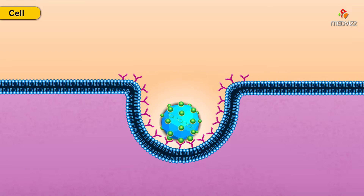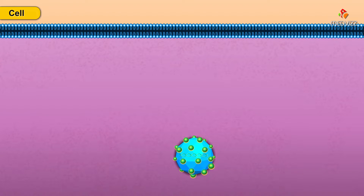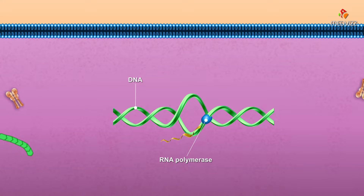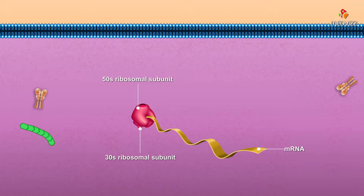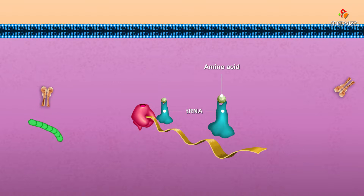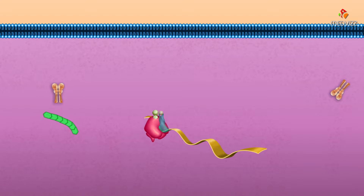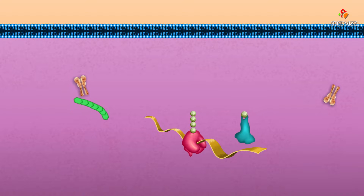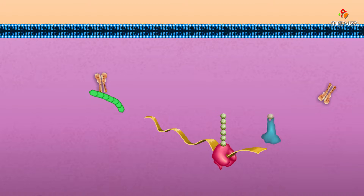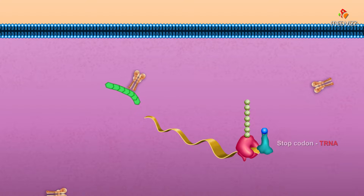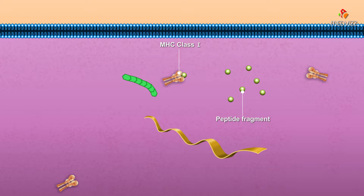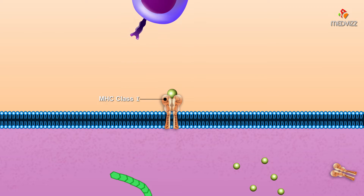When a virus infects a cell and synthesizes viral proteins, some of these proteins are degraded to peptide fragments. These peptide fragments are complexed with class 1 MHCs and displayed on the surface of the infected cell.